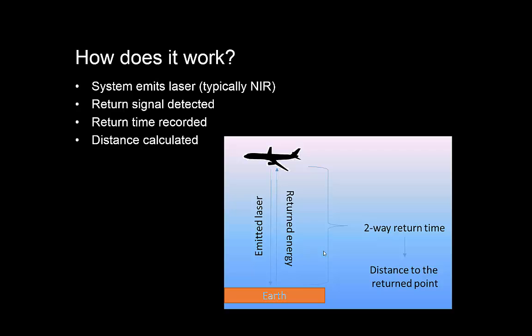As you can imagine, you're looking at a beam of photons in the near-infrared frequency, and those photons hit the surface or elements above the surface and return to the airplane. Some of them do — a lot of them don't — but those that return are measured: the time is recorded for how long it took those photons to come back, and from that, with the speed of light, the distance can be calculated to the target.